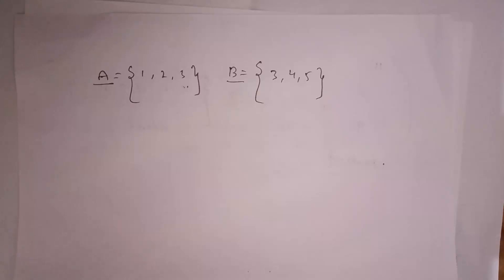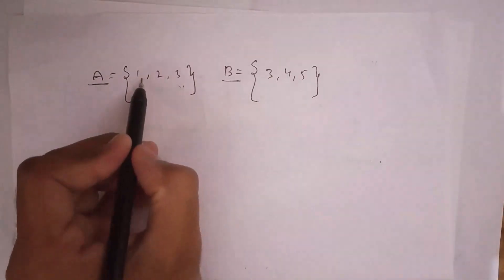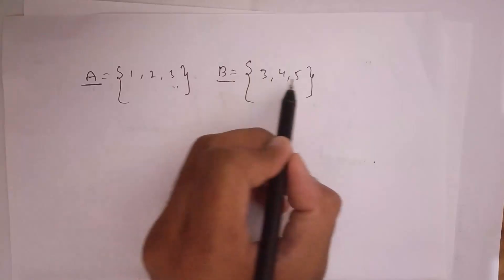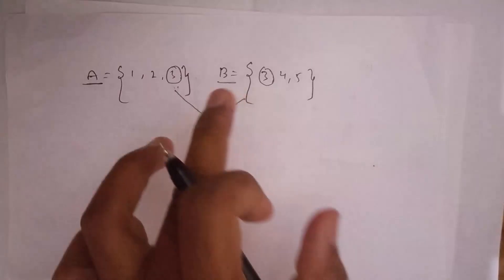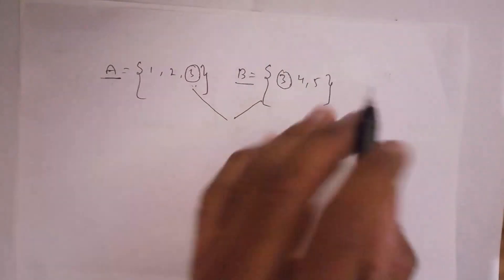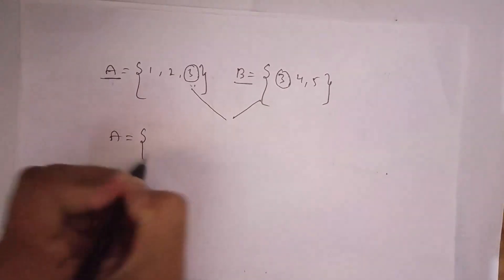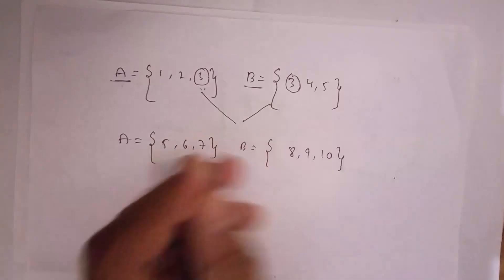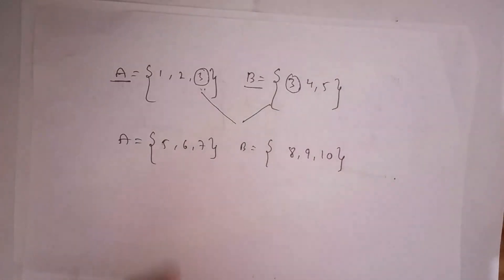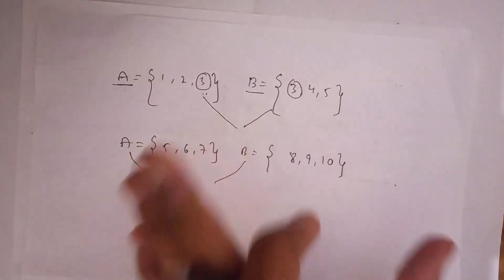Next I will explain what disjoint sets are. Consider two sets: set A contains numbers 1, 2, 3 and set B contains numbers 3, 4, 5. Since 3 is a common element between A and B, we do not call these disjoint sets. If there is no common element between two sets, then we call them disjoint sets. For example, A = {5, 6, 7} and B = {8, 9, 10} have no common elements, so A and B are disjoint sets.